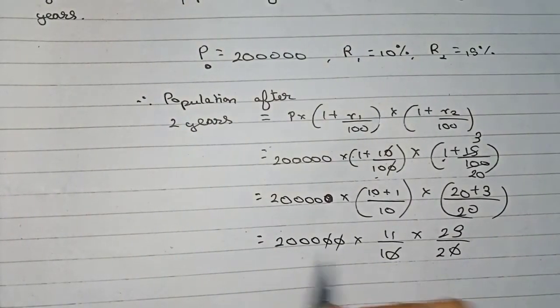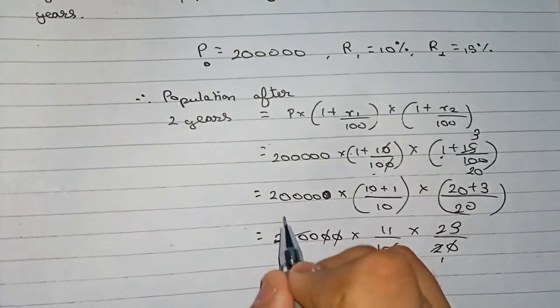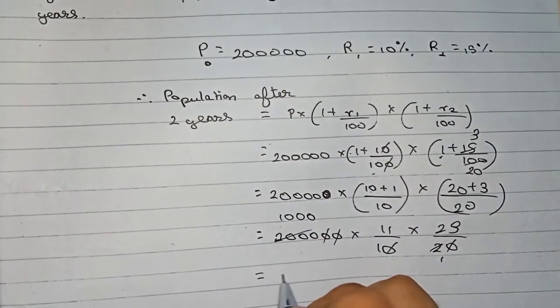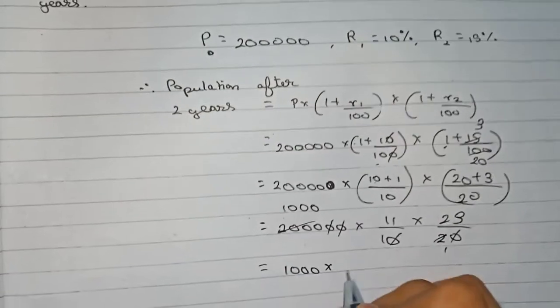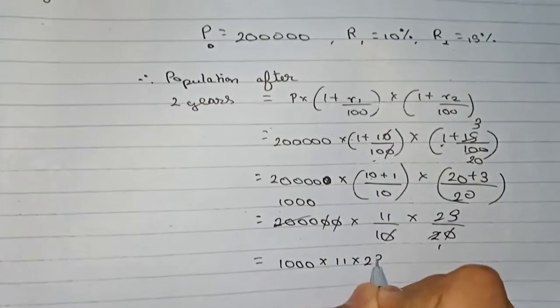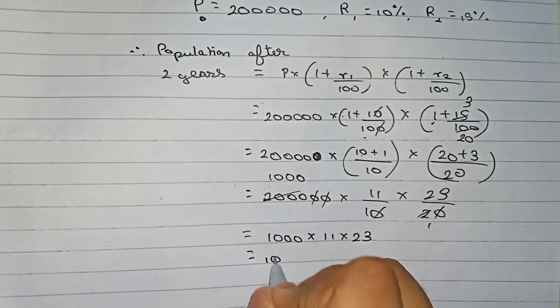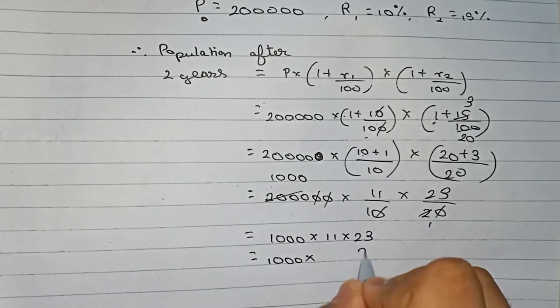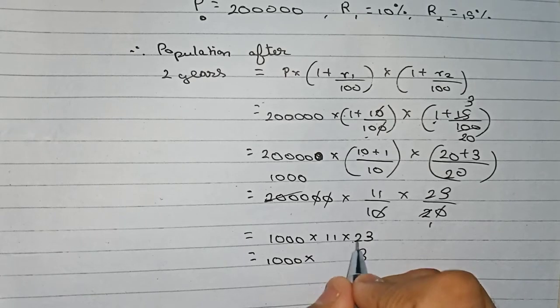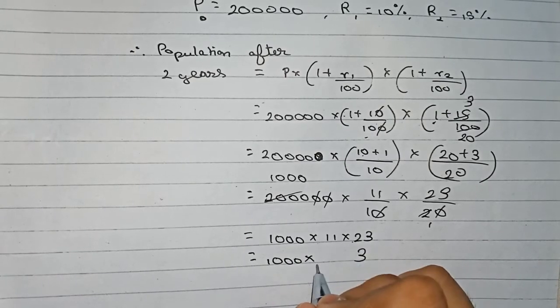Now I cut 2 and 2000, it becomes directly 1000. So finally, it remains 1000 into 11 into 23. So first we do 11 into 23. 11 times 23 is 253.